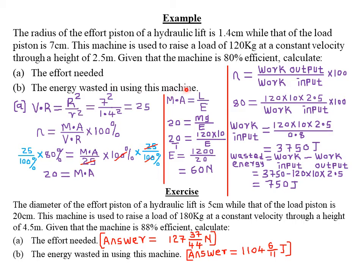Part B asks us to find the energy wasted in using this machine. The energy wasted can be computed in two ways. One method uses the efficiency formula: efficiency equals work output over work input, expressed as a percentage. Work output equals load times load distance. The machine raises 120 kg through a height of 2.5 meters — that vertical height is the load distance. So we can find the work output.